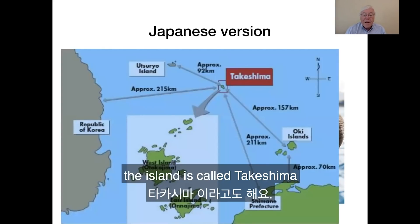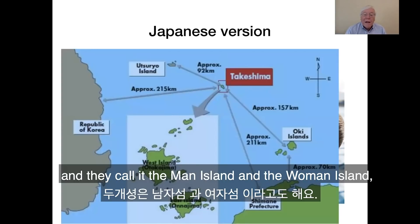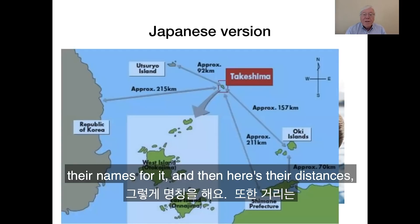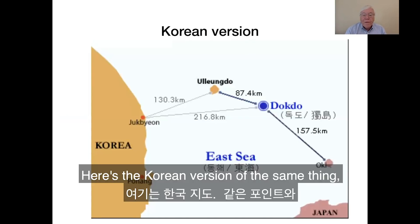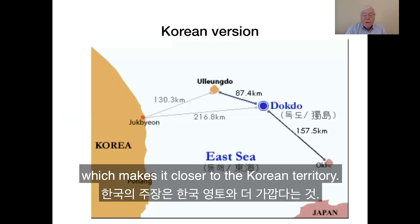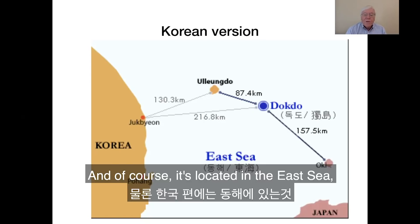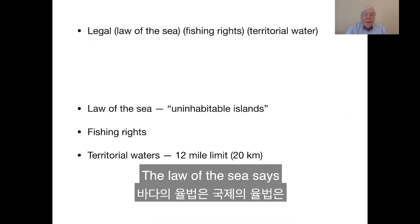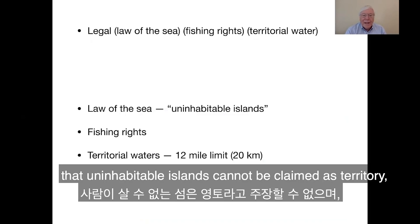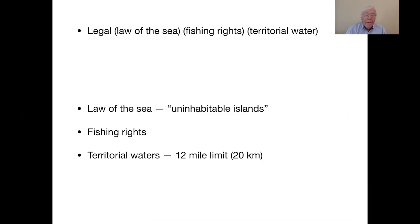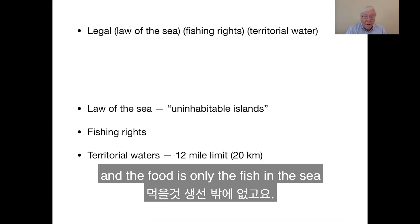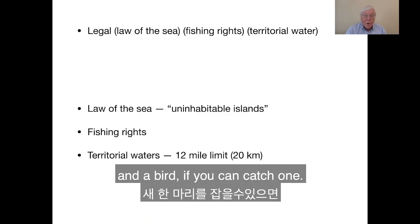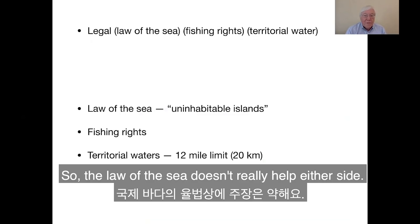The Japanese version is, of course, that the island is called Takashima — they call it the man island and the woman island. They claim it's closer to the mainland, although farther away from another island. The Korean version emphasizes the proximity to Ulungdo, making it closer to Korean territory. Of course, it's located in the East Sea, not the Sea of Japan — that's another issue. The law of the sea says that uninhabitable islands cannot be claimed as territory. The Koreans have occupied it and made it inhabitable, but inhabitable means a source of water and food, and there's no source of water on the island — the food is only fish in the sea. So the law of the sea doesn't really help either side.